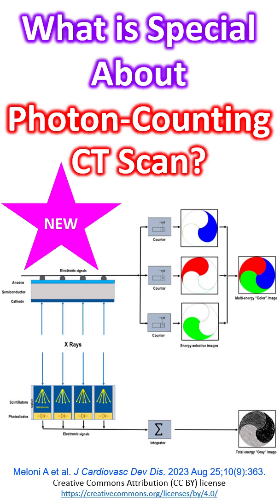Conventional CT uses a two-step indirect conversion process of detection. Photons in the X-ray beam are transformed by a scintillator to visible light. These secondary photons are absorbed by an array of photodiodes and converted to electrical signals. By integrating the energy of all X-ray photons over a specific time frame, the conventional CT detector loses the ability to retain the energy information of individual X-ray photons.